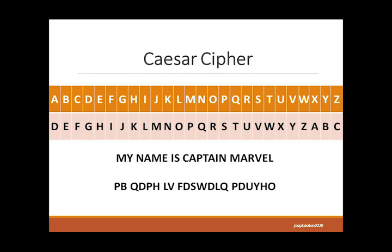For example, to encrypt 'My name is Captain Marvel': replace all M's with P, Y with B, N's with Q, A's with D, E's with H, I's with L, S with V, C with F, P with S, T with W, R with U, V with Y, E with H, and L with O. This is how you read 'My name is Captain Marvel' in Caesar Cipher. You can try this with your own name.